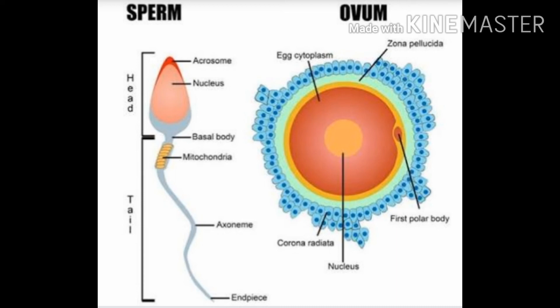Males and females have features that are different from one another. These features are called secondary sexual characters. For example, in males: deeper voice, strongly built, and beard and moustache — these are all male secondary sexual characters. And in females: breasts and wider hips to accommodate the uterus — these are their secondary sexual characters.